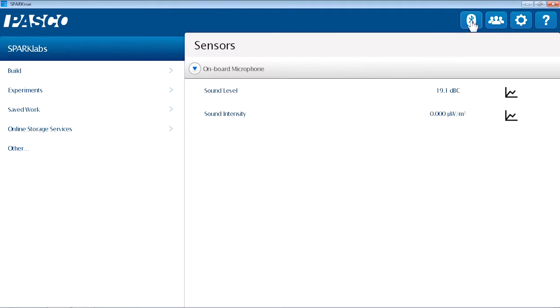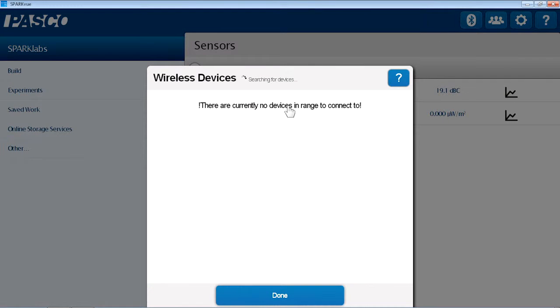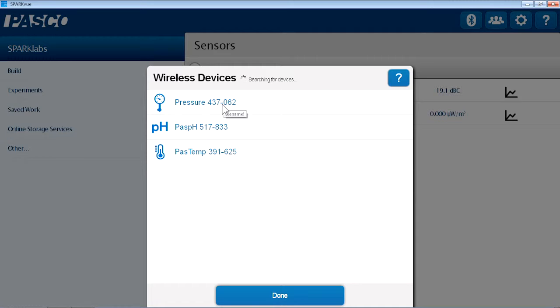So in my software, I can touch the Bluetooth icon. And I will see which devices are broadcasting that signal. And I can see based on measurement, through using these icons, that there's a pressure, a temperature, and a pH. And if I have a class set of a particular measurement, I can identify them based on their unique ID number.